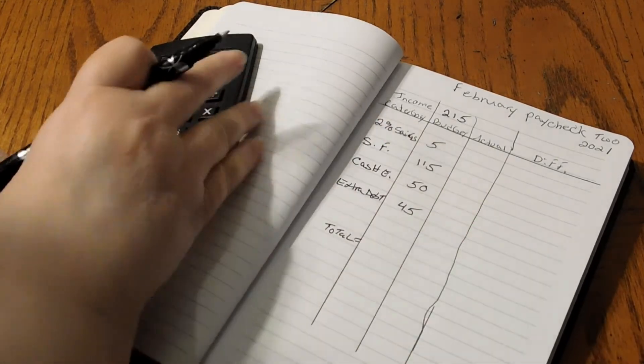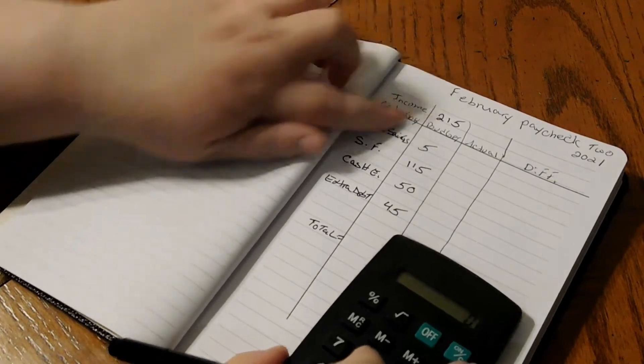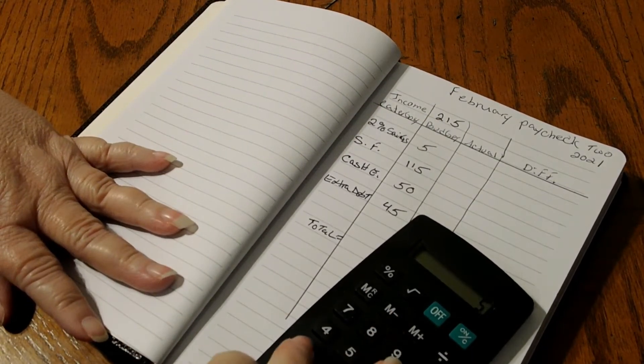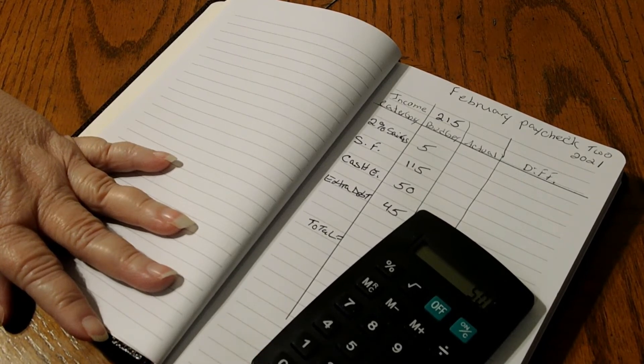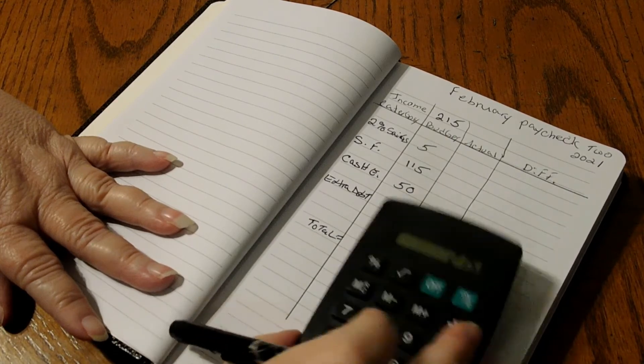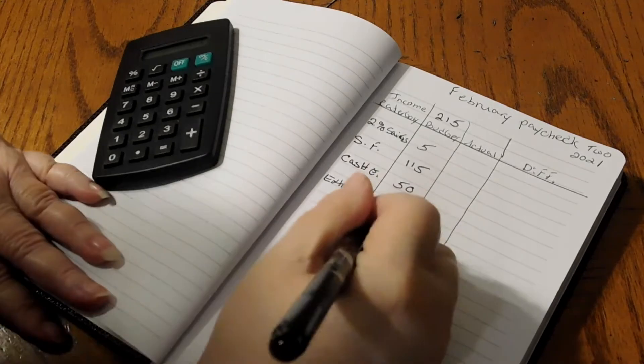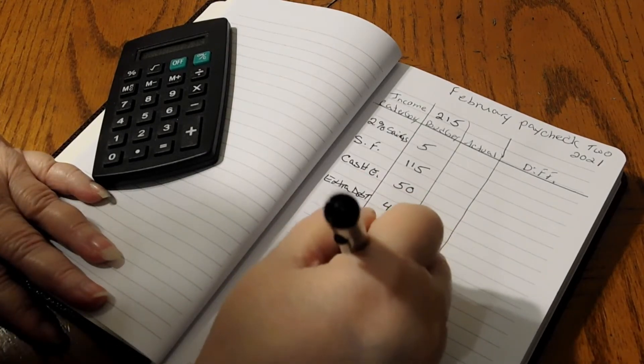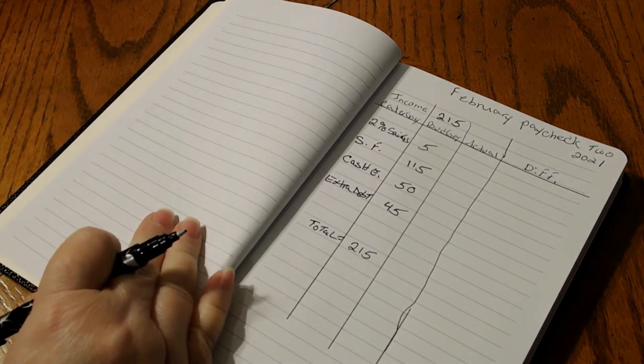So we're going to put 45. We're going to recalculate to make sure we come up to $215. So we have 5 plus 115 plus 50 plus 45 equals $215. So we are correct with that. That gives us a zero-based budget for paycheck two.